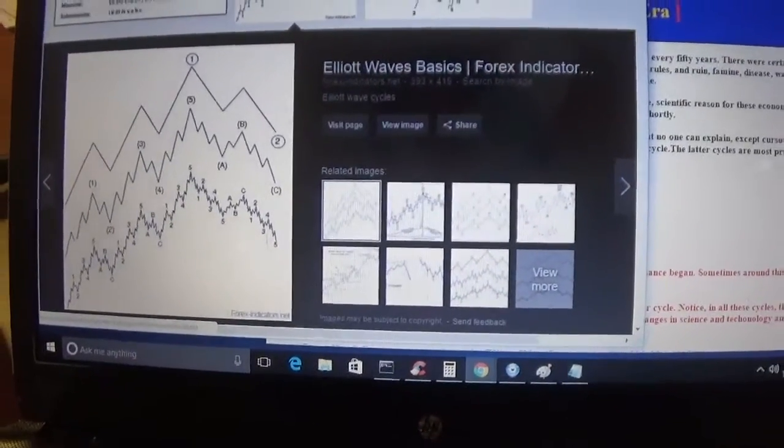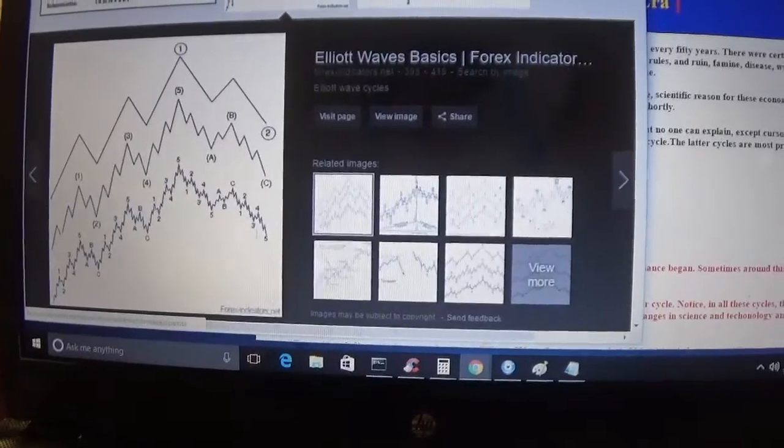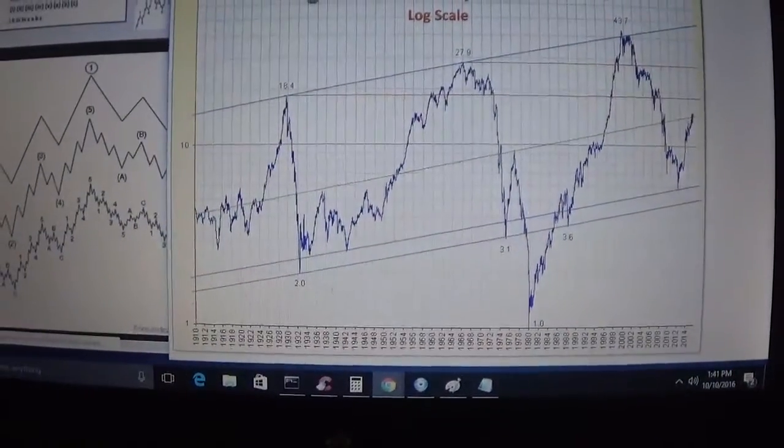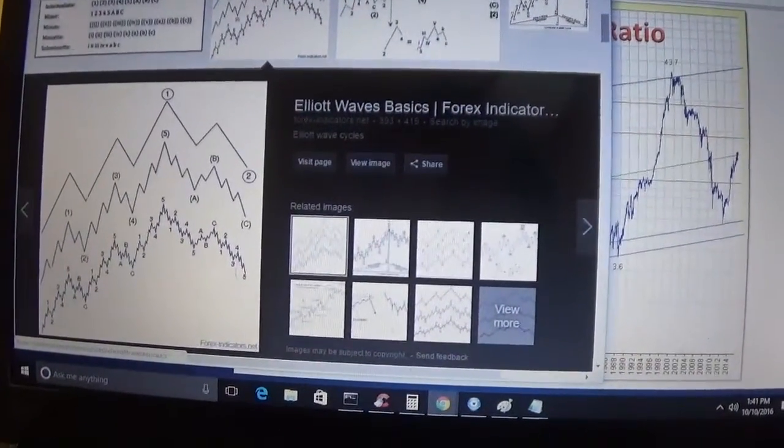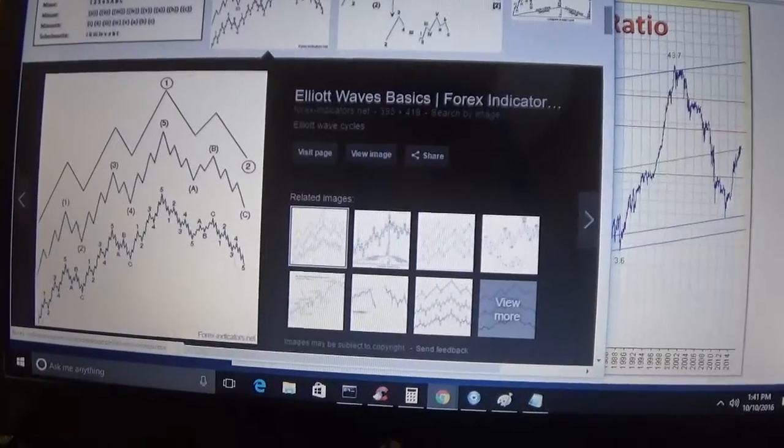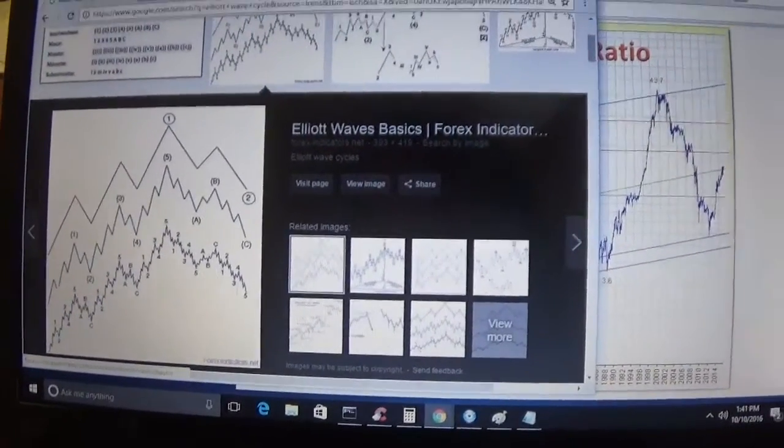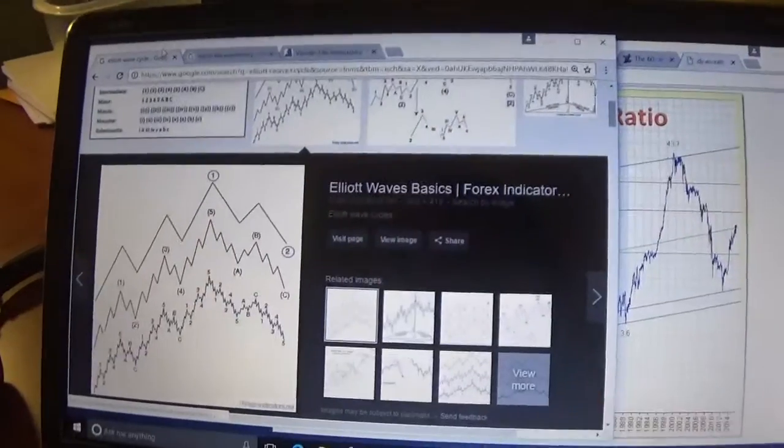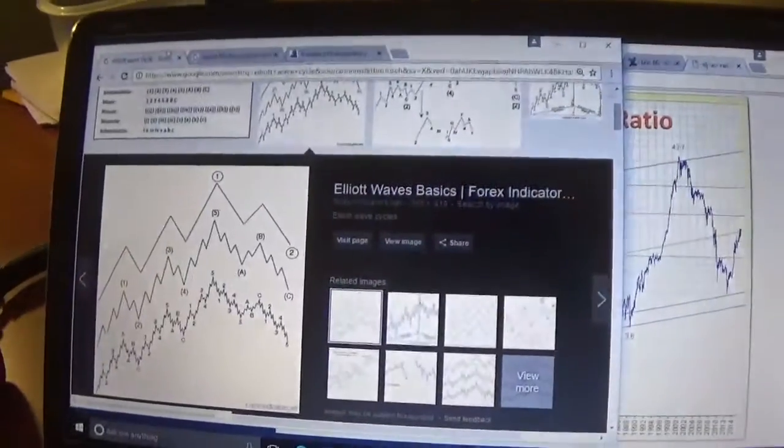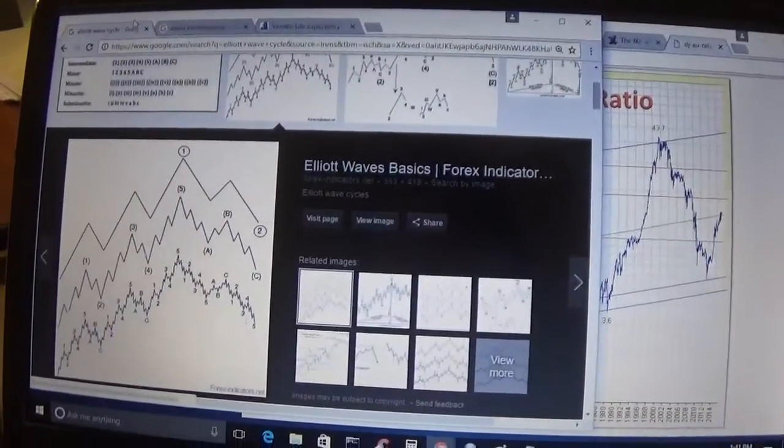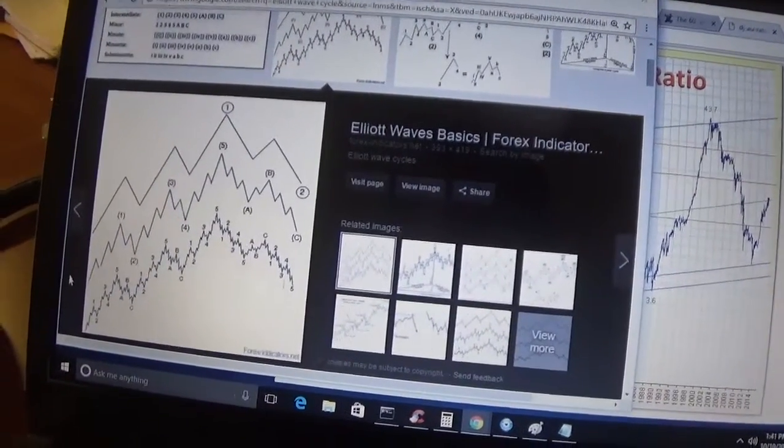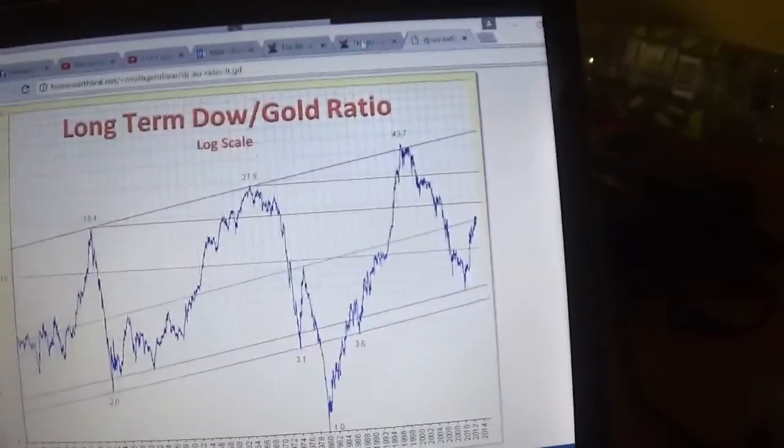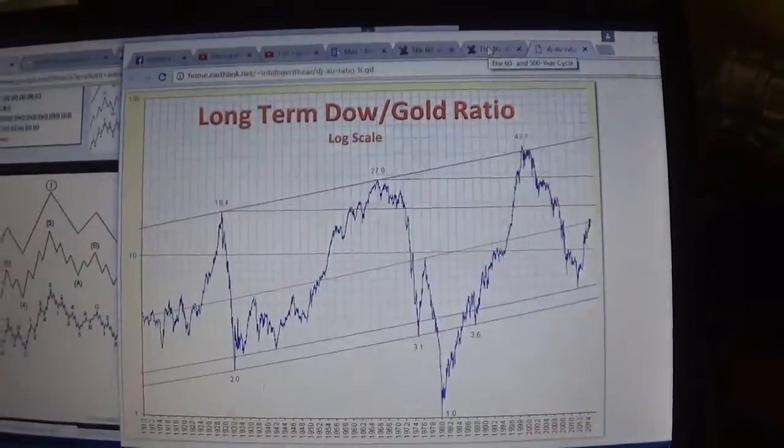The basis for the Dow to Gold ratio moving the way it does is Elliott Wave Cycle Theory. The theory is that there are 7 billion people in the world and everybody has a general pattern: they accumulate wealth and then retire and spend it down. When you add 7 billion waves together, you have cycles that are roughly one lifespan in length aggregated together, which makes something that looks like this.